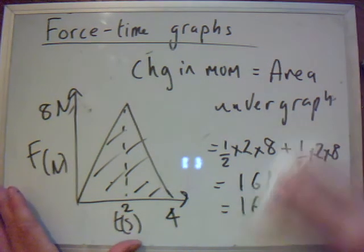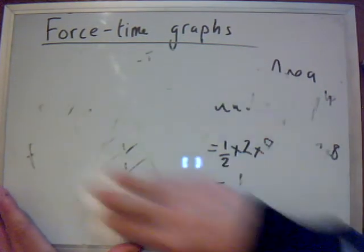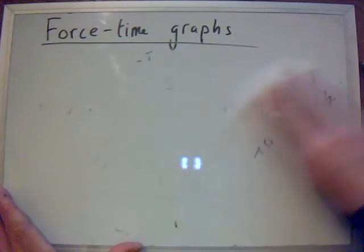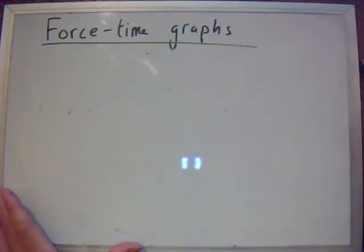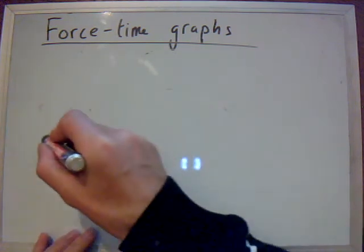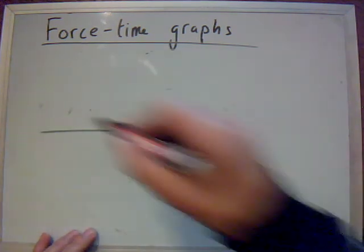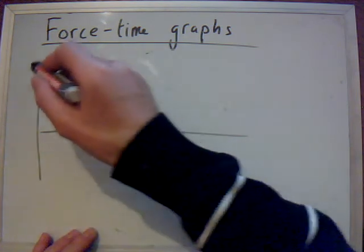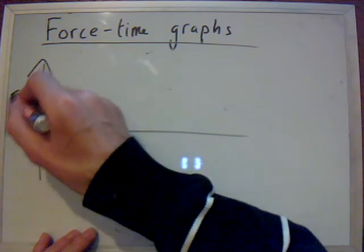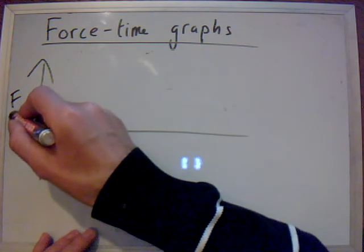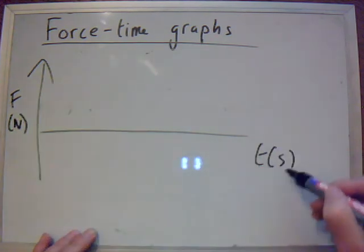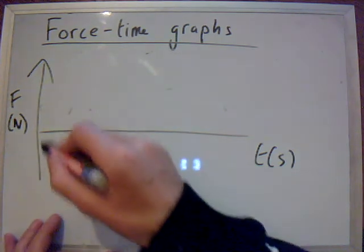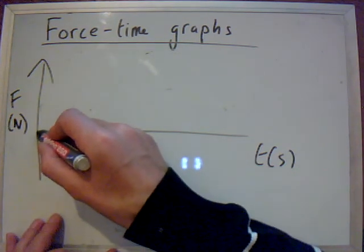Now, let's look at another example. This example here I'm about to draw is modelling somebody running with a constant velocity. So, this time we're going to have negative. So, this is the force in Newtons time in seconds. Let's have a look at this. We can draw something that looks a bit like this.